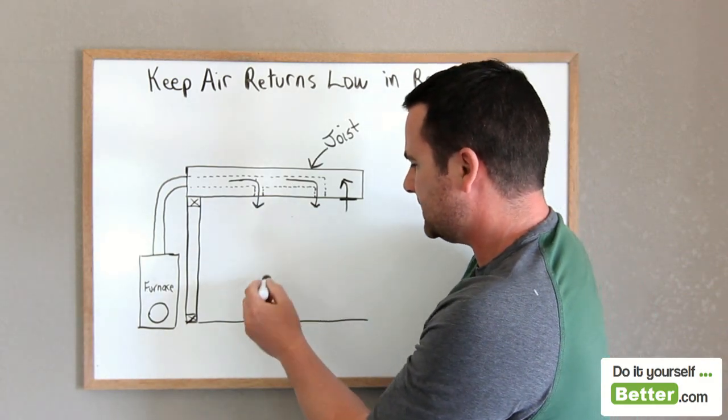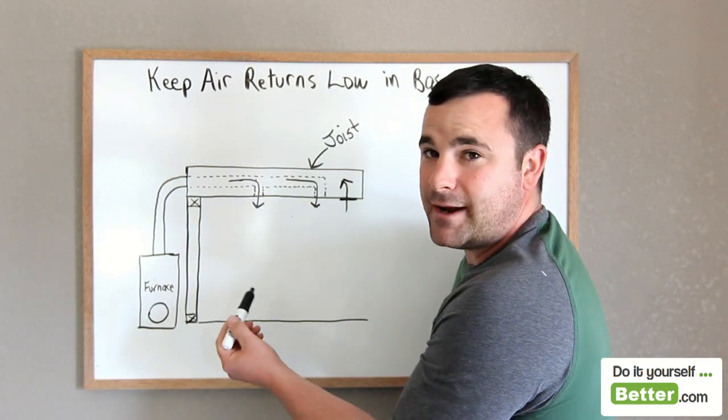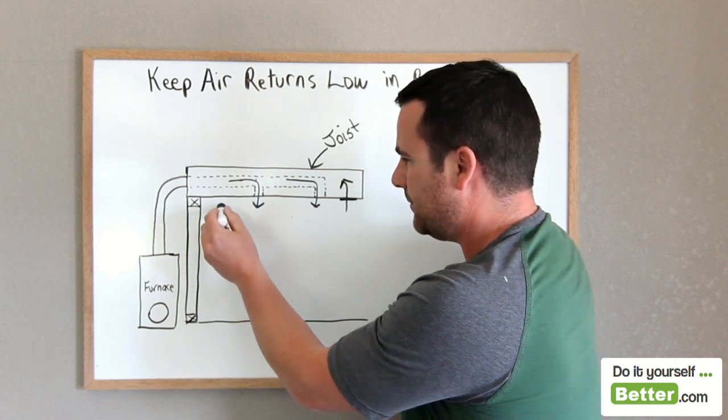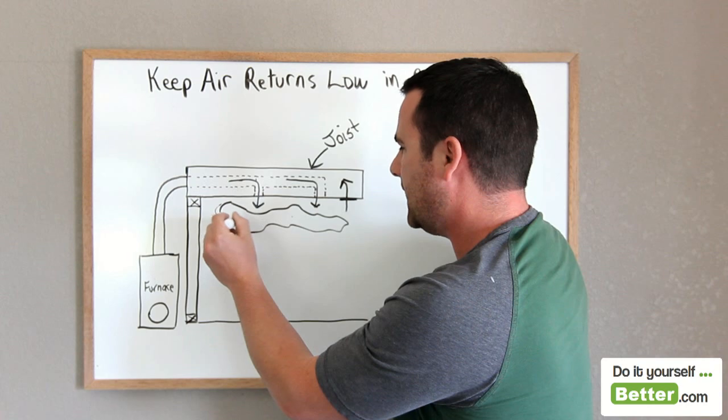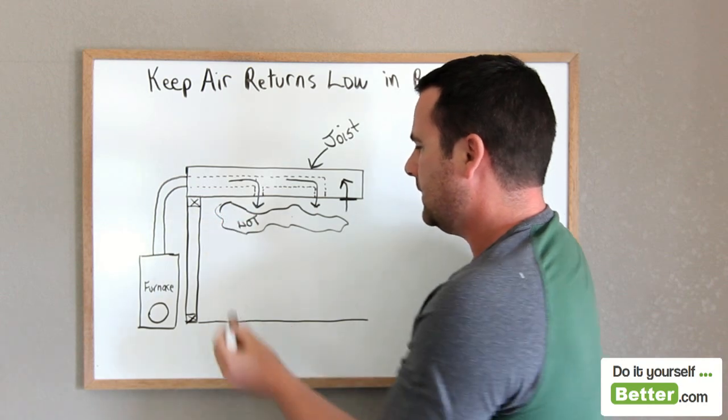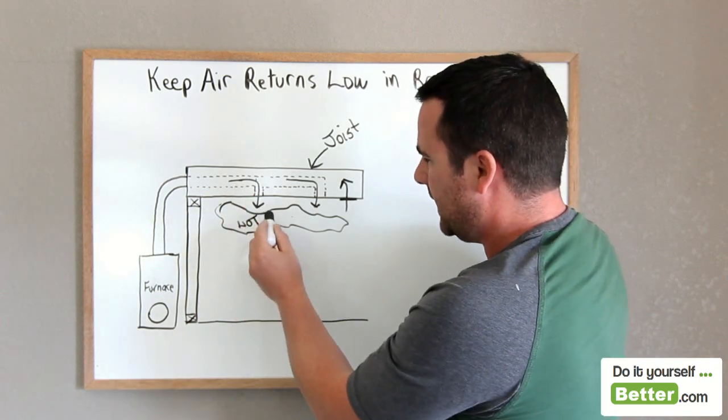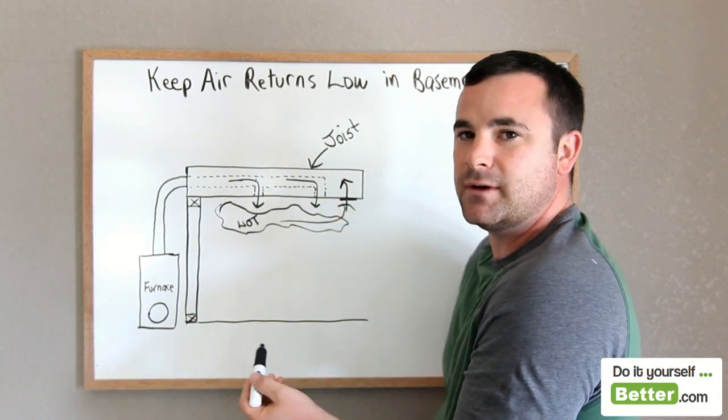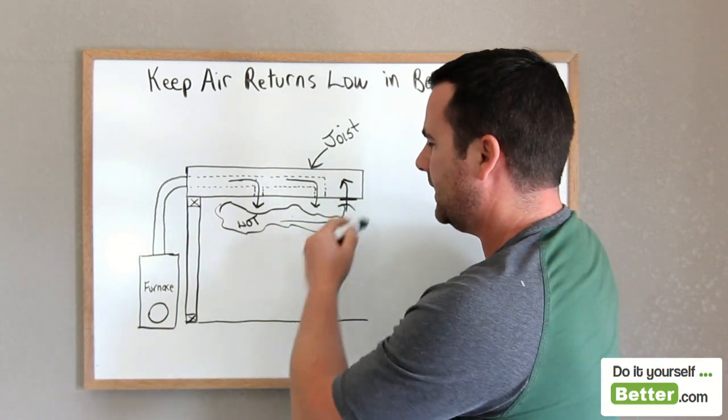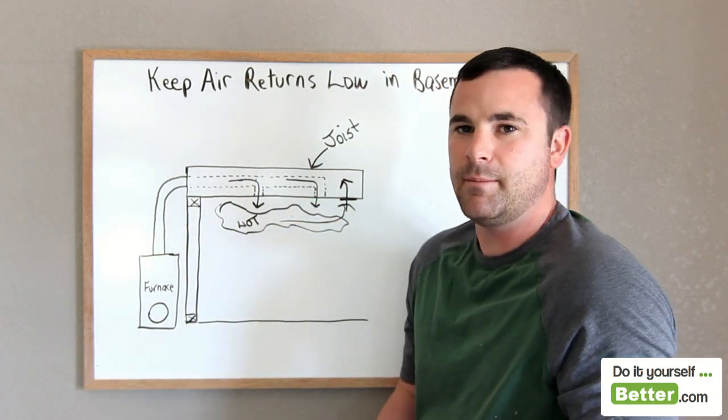What happens is hot air rises. So all your hot air is sitting up here, and that's hot air. It forces hot air in, but then this air return just drags the hot air back up. So essentially all your hot air is just mixing up at the top.